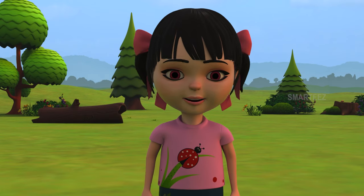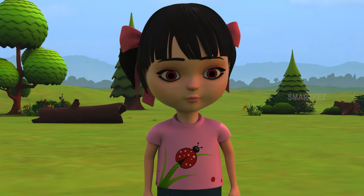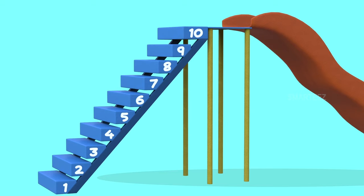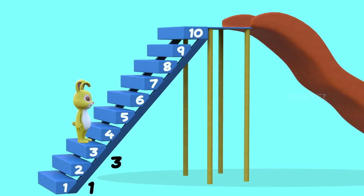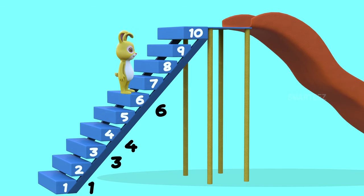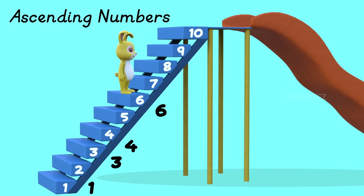Yes, it is ascending. Let me explain. The bunny jumped from step 1 to step 3, then step 3 to step 4, and finally from step 4 to step 6. So, the numbers went 1, 3, 4, 6. Since the numbers are going up, we call them ascending numbers.